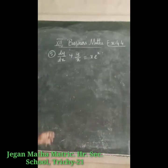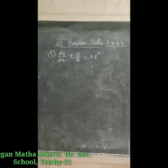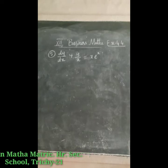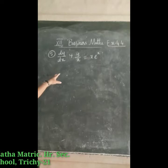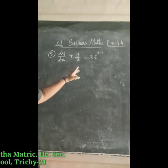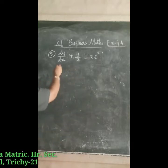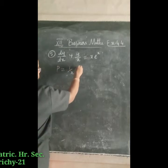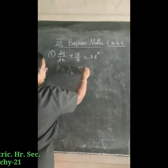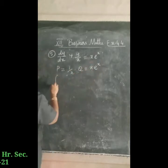The fifth question is: dy/dx + y/x = x·e^x. It is in the linear form dy/dx + py = q. Here p is equal to 1/x and q is equal to x·e^x.